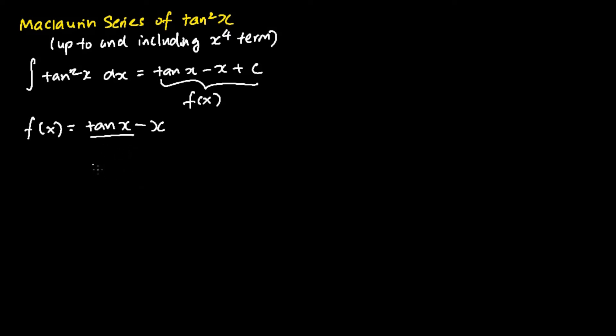Tangent x has a Maclaurin series and its Maclaurin series up to and including the x to the power 5 term is as follows: x plus 1 over 3 x cubed plus 2 over 15 x to the power 5.